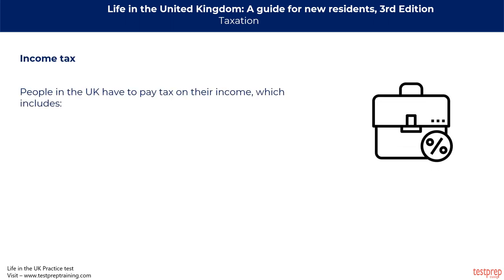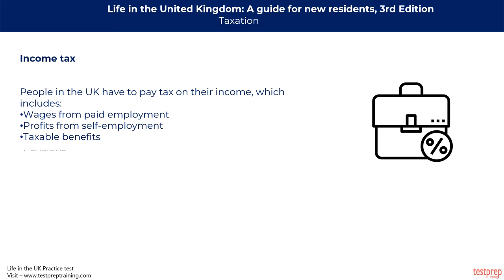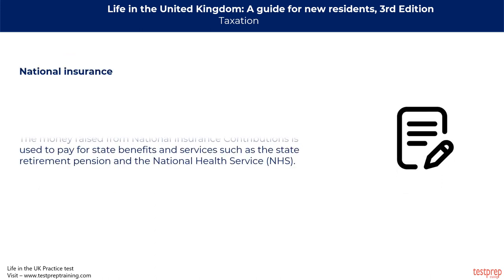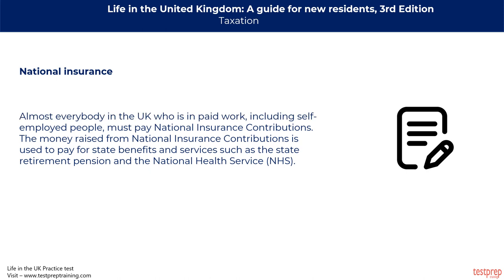People in the UK have to pay income tax on wages from paid employment, profits from self-employment, taxable benefits, pensions, and income from property, savings and dividends. Money raised from income tax pays for government services such as roads, education, police, and the armed forces. Almost everybody in paid work, including self-employed people, must pay national insurance contributions. The money raised from national insurance contributions is used to pay for state benefits and services such as the state retirement pension and the National Health Service.